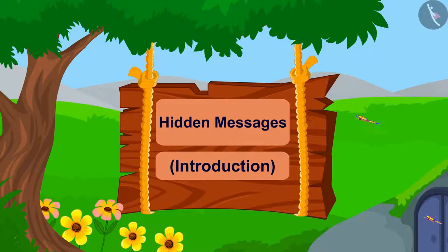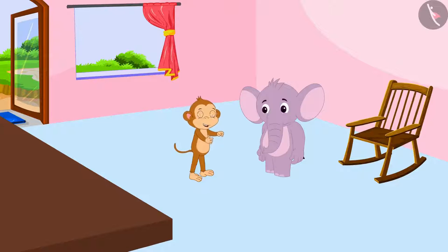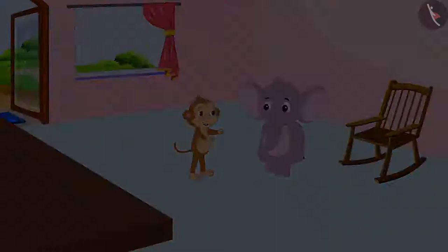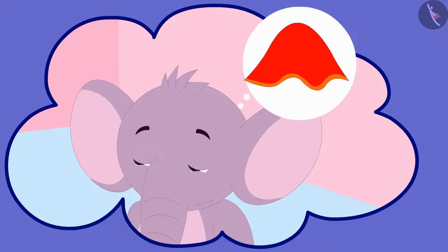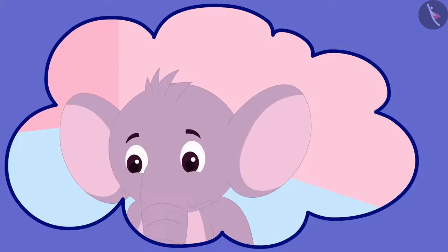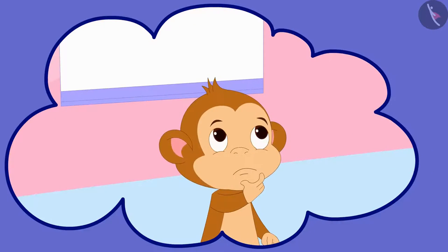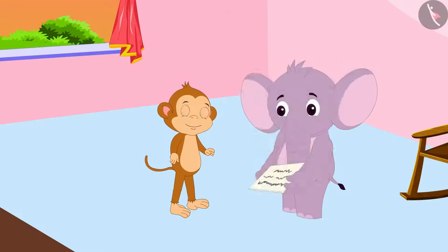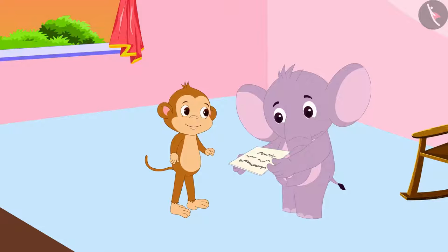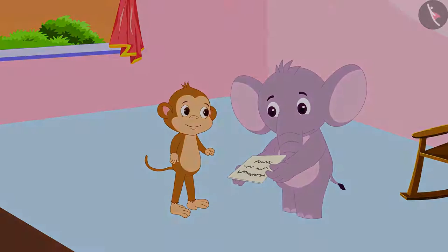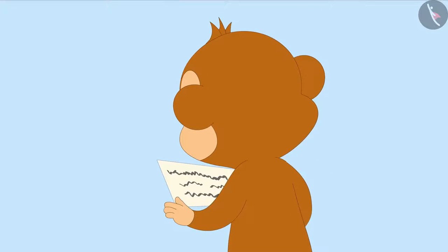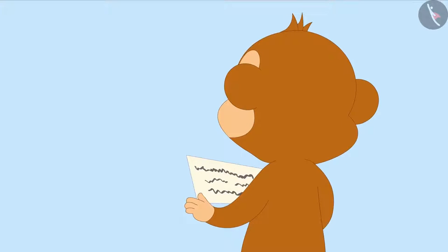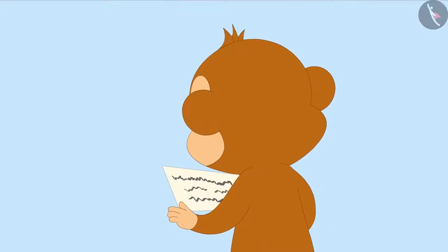In this video, we will learn about hidden messages. Appu and Baban are playing a game. Appu has hidden an object and Baban has to find that object. Appu has written some letters for Baban. Baban will find clues from those letters to find the object.